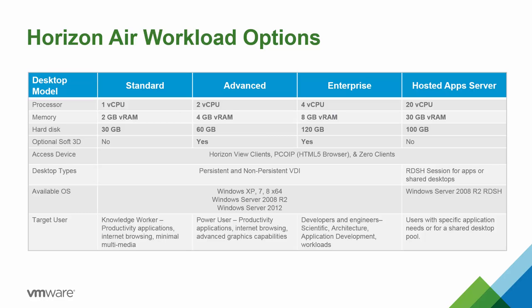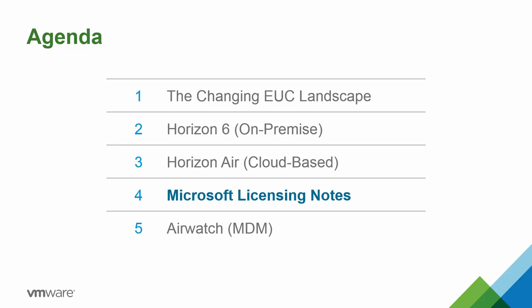Horizon Air desktops come in three editions — Standard, Advanced, and Enterprise — to accommodate different needs. The differences are essentially the amount of compute resources: CPU, RAM, and storage, as shown in the chart. You also have the option to host applications for your desktops in the cloud using a Windows Server to provide those hosted apps.